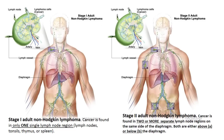Stage II non-Hodgkin's involves two or more separate lymph node regions on the same side of the diaphragm — for example, cervical and axillary regions both affected above the diaphragm, or inguinal lymph nodes below the diaphragm. There are lymph nodes throughout the body, and as long as cancer involves two or more separate regions on the same side, that is stage II adult non-Hodgkin's lymphoma.